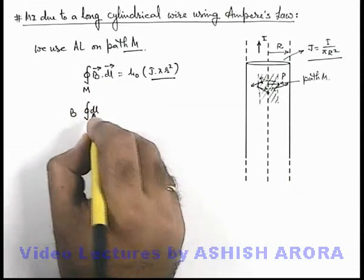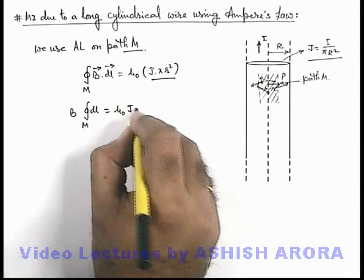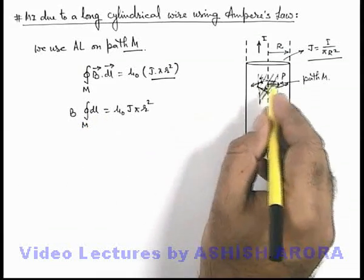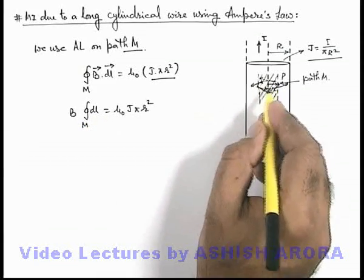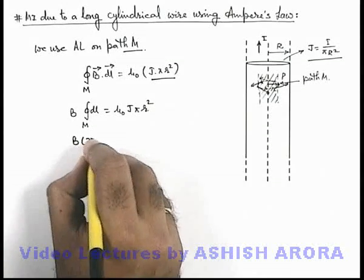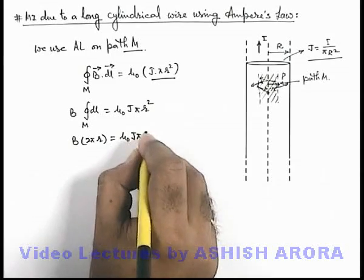And integration of dL for the closed path M is equal to μ₀ J π r². And this integration of dL for the closed path which is of radius r can be written as its circumference, so this will be B into 2π r is equal to μ₀ J π r².